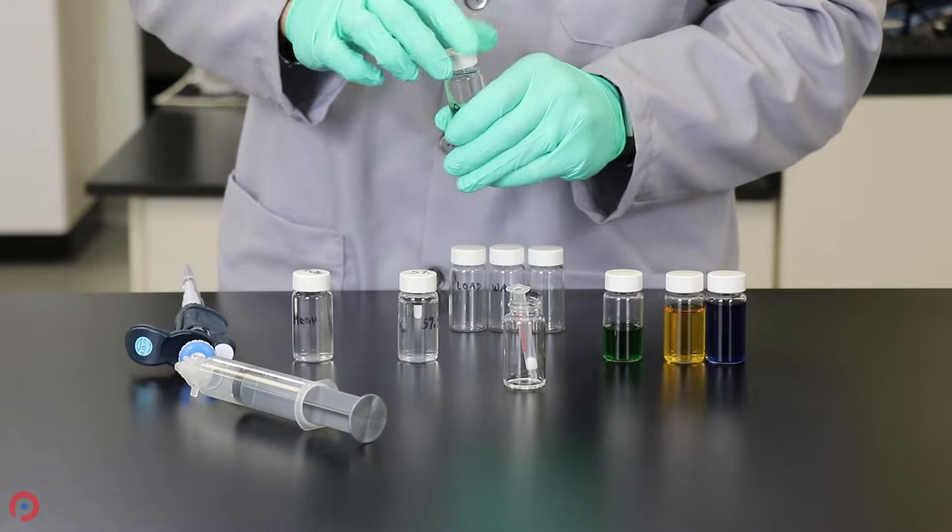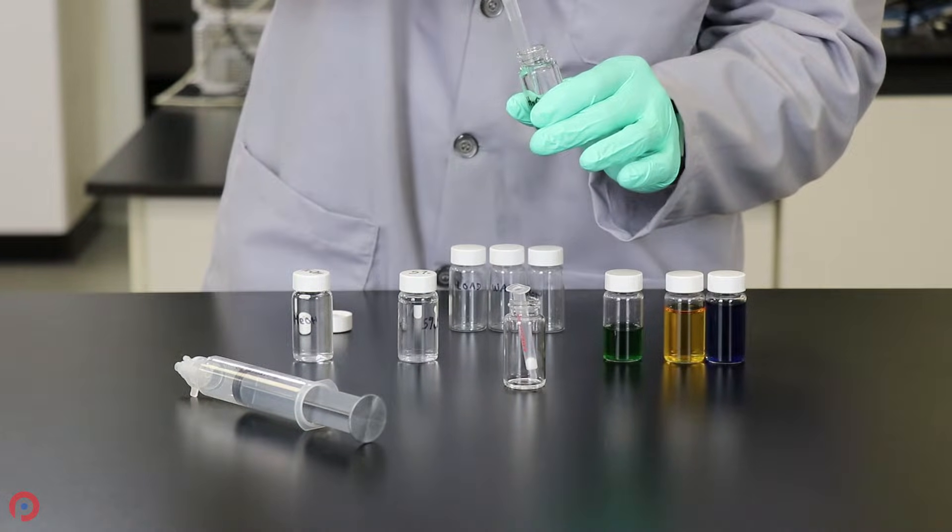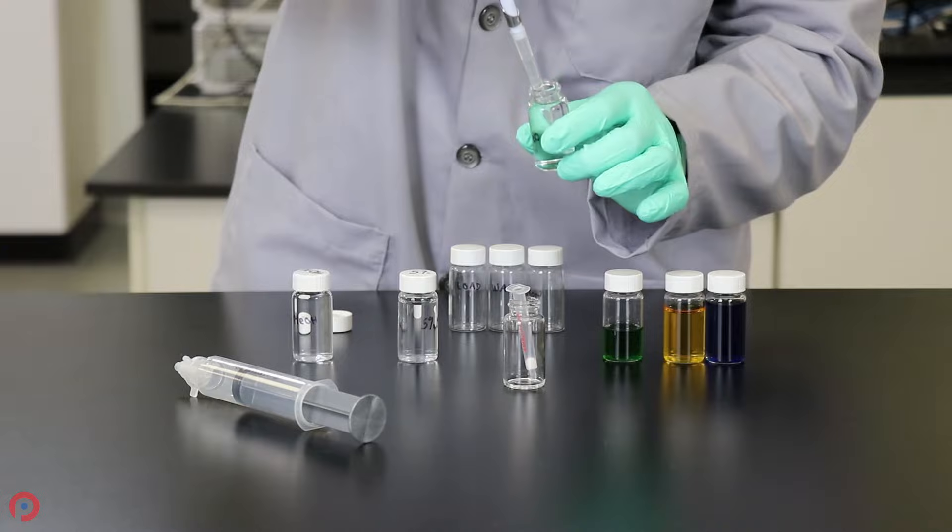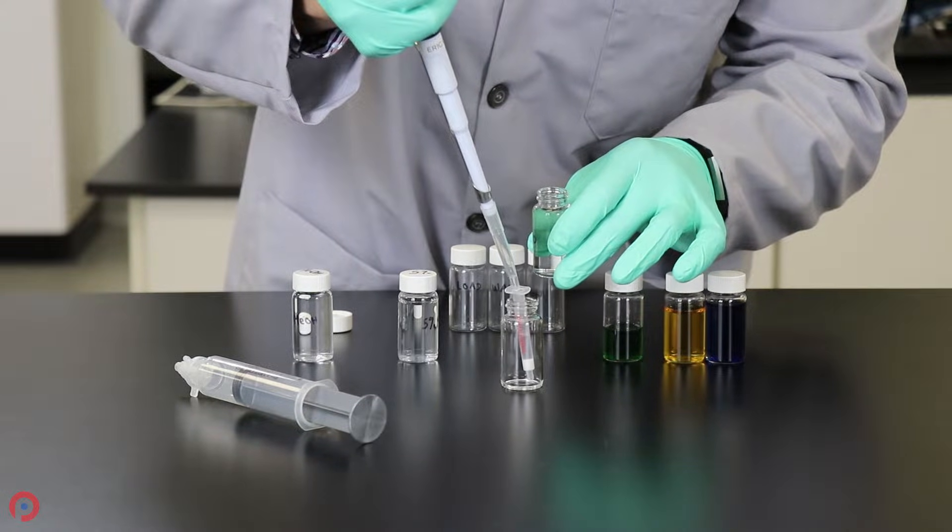The next step is going to be the equilibration step. I'm going to be flushing out most but not all of the methanol with some water. So, again, I'm going to pipette about 600 microliters of water onto the SPE cartridge.